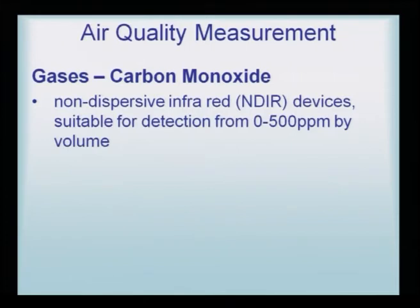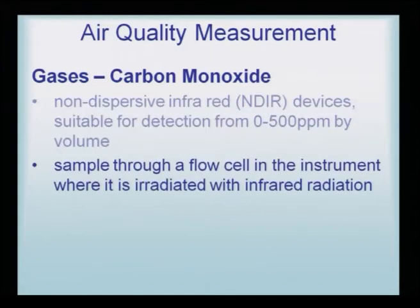Continuing with air quality measurement, the analysis of carbon monoxide has to be done in a very specific manner. Non-dispersive infrared NDIR devices are more suited for detection of 0 to 500 ppm by volume. The SOx and NOx could be done by UV method, but carbon monoxide requires a non-dispersive infrared device. The sample passes through a flow cell in the instrument, where it is irradiated with infrared radiation.